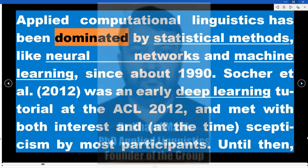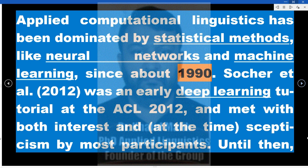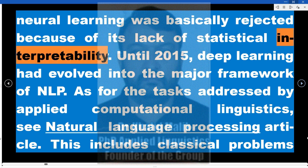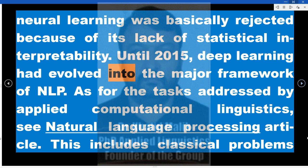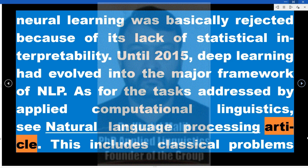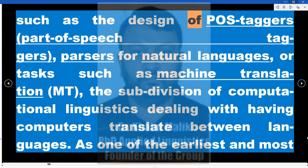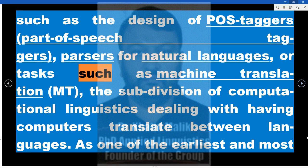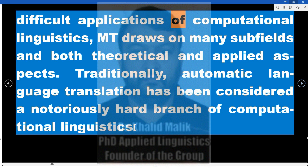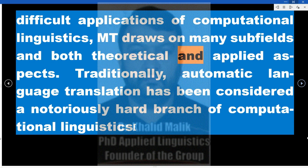Applied computational linguistics has been dominated by statistical methods like neural networks and machine learning since about 1990. Socher et al. (2012) presented an early deep learning tutorial at ACL 2012, met with both interest and skepticism. Until 2015, deep learning had evolved into the major framework of NLP. Applied tasks include classical problems such as POS taggers, parsers for natural languages, and machine translation (MT) — the subdivision of computational linguistics dealing with having computers translate between languages — which draws on many subfields in both theoretical and applied aspects.